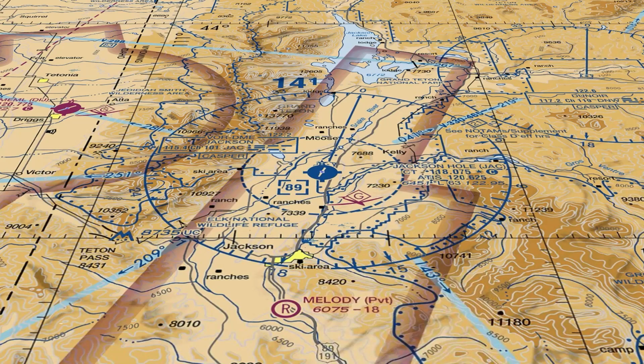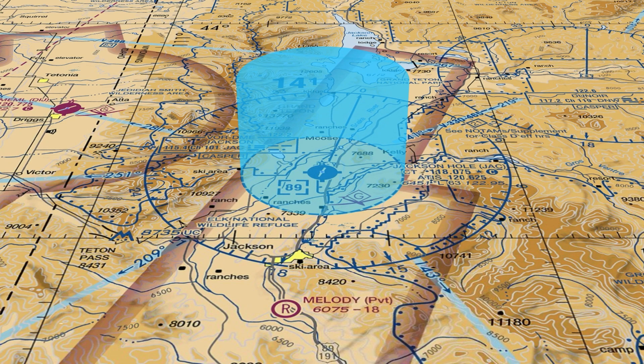In similar succession, Class D is only going to be the first cylinder. Class E is unique in that it can either refer to controlled airspace around certain airports, or be general airspace above 1,200 feet AGL.